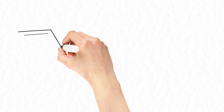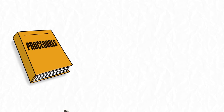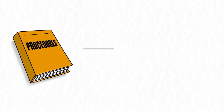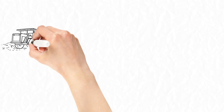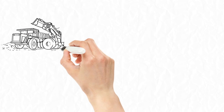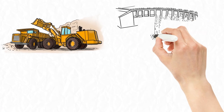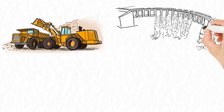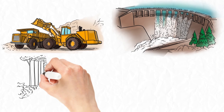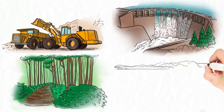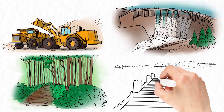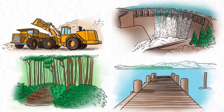The procedures document that accompanies the policy contains all of the principles and considerations for how to use the policy to guide mitigation planning for a project. Though it was developed for large projects like mines and hydropower, the Environmental Mitigation Policy can also apply to smaller projects that may impact the environment, such as building a trail to a dock in a riparian area.